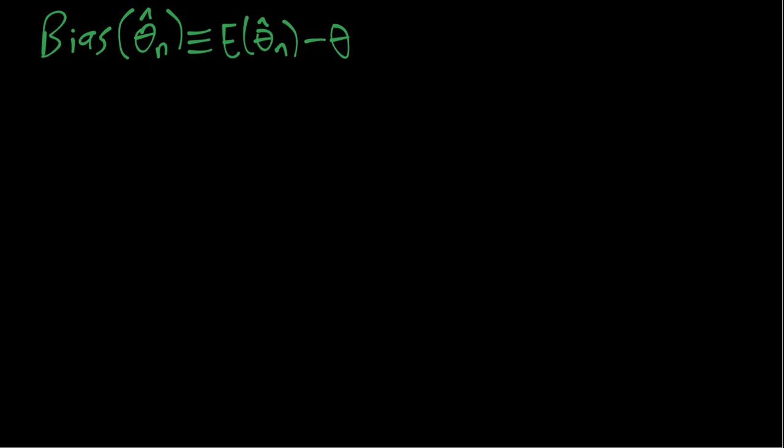So the bias in particular looks at the mean of the sampling distribution of the estimator and compares that to the true population value of the parameter we want to estimate. In particular, in this video we'll think about the sample mean as an estimator of the population mean.